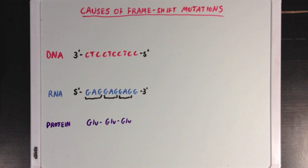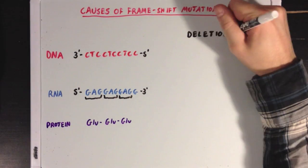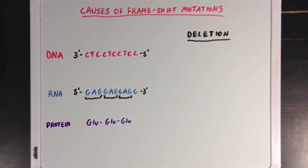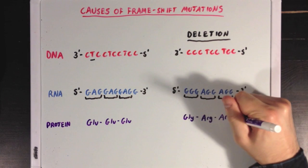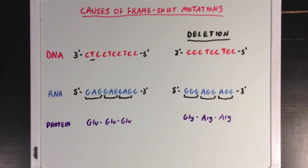The other way that you can cause a frameshift mutation is through a base deletion. So in a deletion, we drop off one of our bases from our original sequence. So here, I've dropped that first thymine base. And this would also result in a shift of the RNA reading frame. Now, instead of having three GAG codons, we have a GGG codon, and two AGG codons, which would lead to a protein with a glycine and two arginine amino acids.